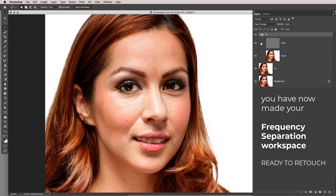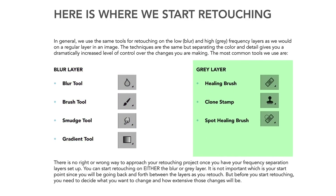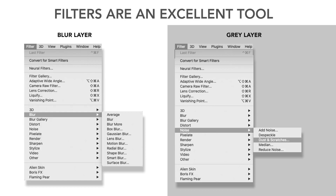Let's look at the tools you'll use. On the blur layer, you'll often use the blur tool, brush tool, smudge tool, and gradient tool — you're smudging and moving existing pixels or adding to another layer. Remember the blur layer is blurry, so the tools you're using are not sharp. On the gray layer, you'll more often use the healing brush, clone stamp, or spot healing brush, since you're dealing with detail and want to keep things sharp.